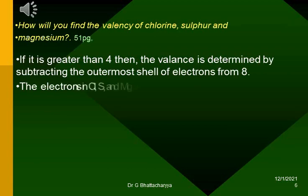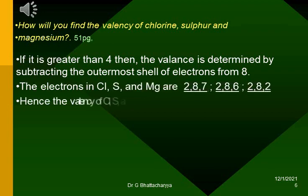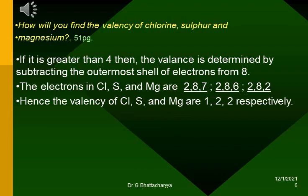The electrons in Cl, S, and Mg are 2, 8, 7, 2, 8, 6, 2, 8, 2, hence the valency of Cl, S, and Mg are 1, 2, 2 respectively.